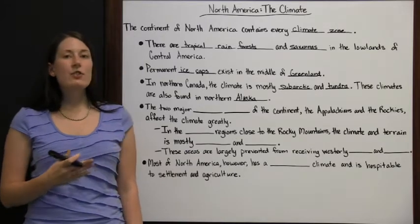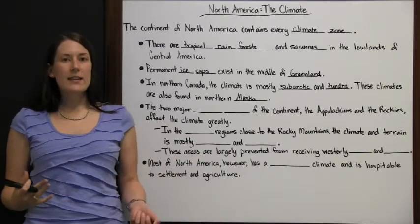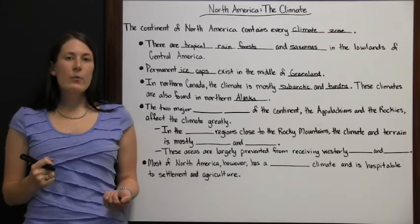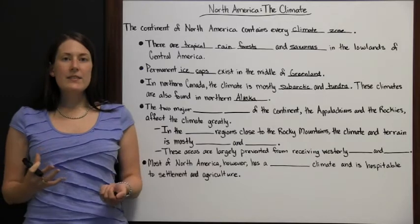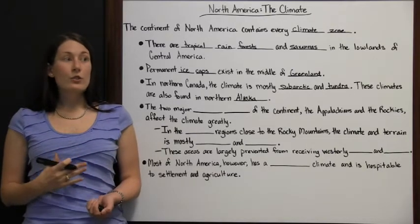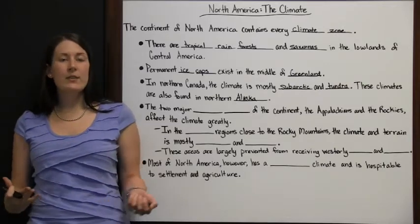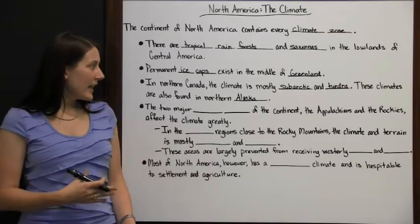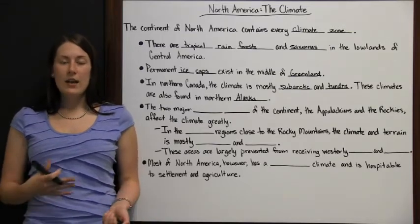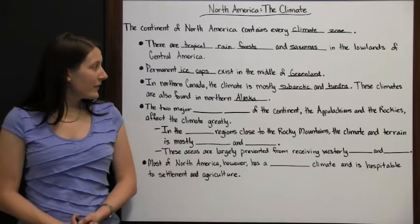These subarctic and tundra areas are going to be very cold and usually very dry, and you're not going to have a lot of things that can grow. It's going to be hardier shrubbery with leaves that can withstand colder temperatures. You're not going to get the same kind of plants you'd get in a milder climate, and without as much moisture, there won't be as much growing in those areas.